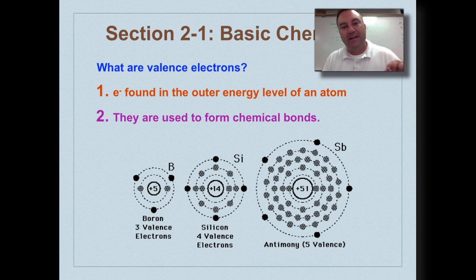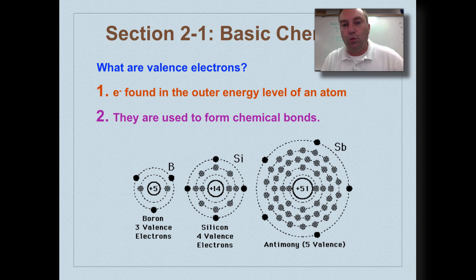Alright, now what are valence electrons? Valence electrons are really, really important. These are the electrons in an atom that are used to make the chemical bonds. Now valence means on the outside. So valence electrons are found in the outermost energy level of an atom.